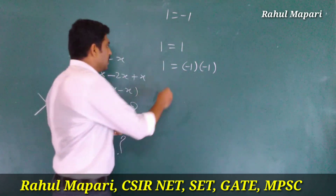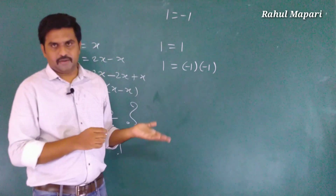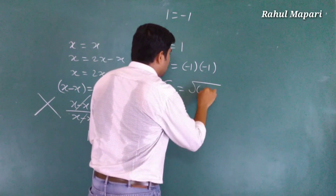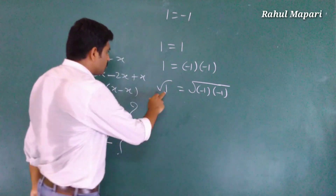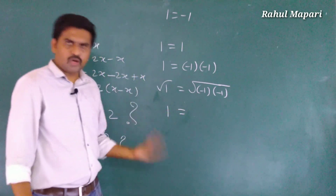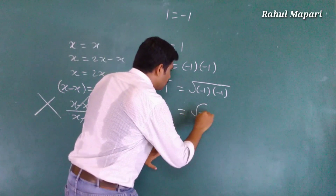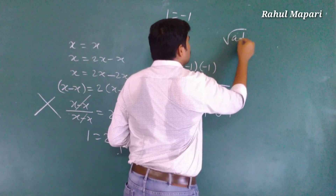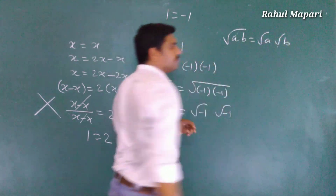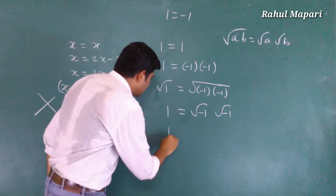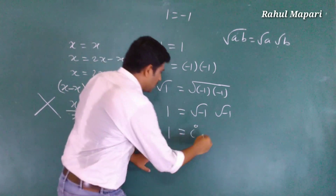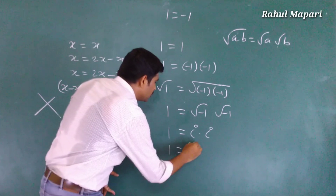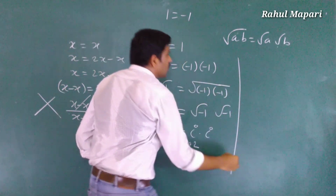One can be written as minus one times minus one. This is a problem. When you apply square root on both sides — square root of one, and square root of minus one times minus one — they separate it: square root of one is 1. And they say square root of minus 1 times minus 1 equals root(−1) times root(−1), using the rule root(a·b) = root(a) · root(b). So root(−1) is i, and i times i equals i squared, and i squared equals minus 1.